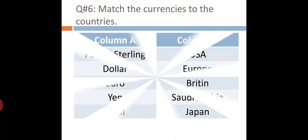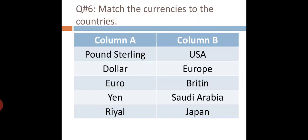In question number six, you have to match the currencies to the countries. Pound sterling is the currency of Britain. Dollar is the currency of USA. Euro is the currency of Europe. Yen is the currency of Japan. And riyal is the currency of Saudi Arabia.